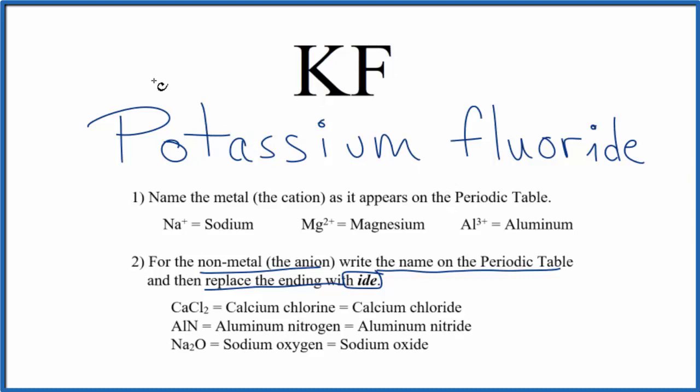you need to recognize that potassium has a 1 plus ionic charge, and fluorine has a 1 minus when they're bonded. The 1 plus and the 1 minus balance out, giving us a net charge of 0. So we just have KF for potassium fluoride.